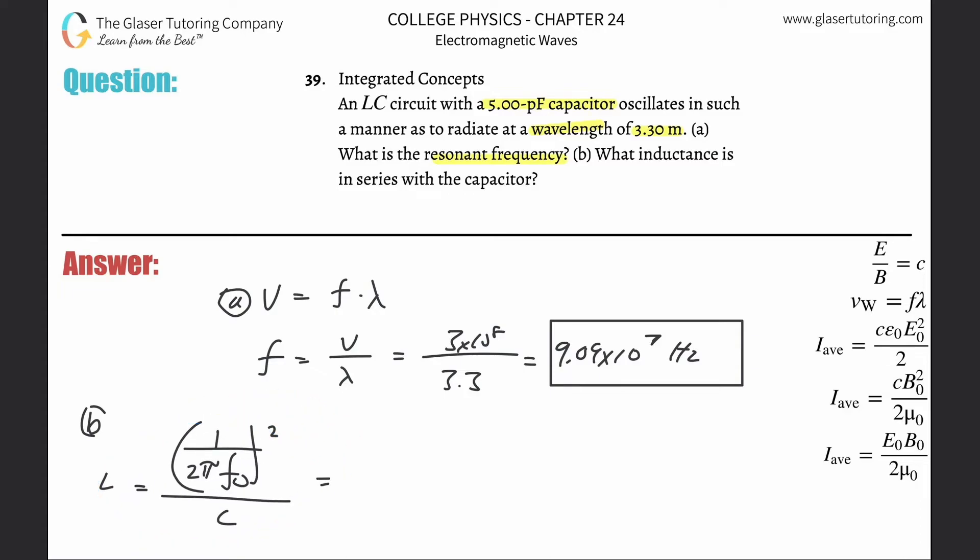So now this is going to be 1 over... Now 2π multiplied by the resonant frequency of 9.09 times 10 to the 7th, that whole thing is going to be squared, then divide that by the capacitance. And they told you it was 5 picofarads, but we need that in farads, so multiply that by 10 to the minus 12th. And there we go.